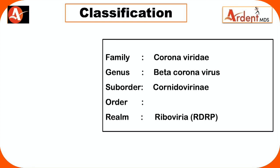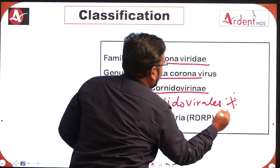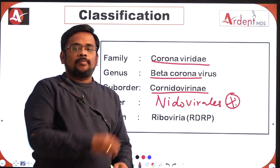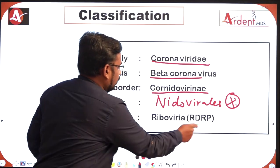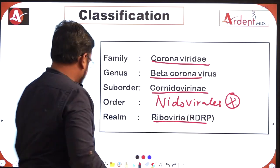Coming to the classification: the family is Coronaviridae, the genus is Betacoronavirus, the suborder is Cornidoviridae, and the order — very important — is Nidovirales. Riboviridae is a virus belonging to the same family, which uses RNA-dependent RNA polymerase.